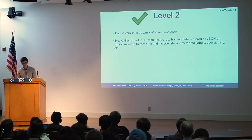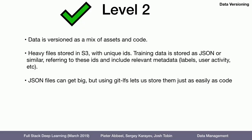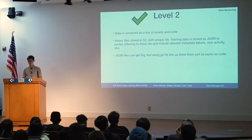JSON files can get big because you might have millions of examples — millions of rows in a text file is going to be several megabytes, probably not something you want to check into version control like code. But there's a thing called Git LFS, which stands for Git Large File Storage, which we actually use in the lab. This lets us store large data files just as easily as code.